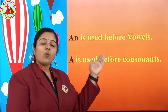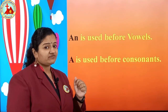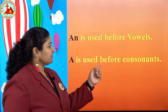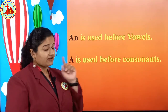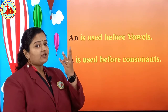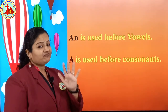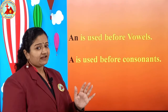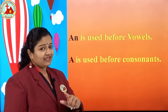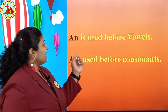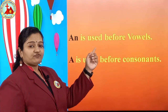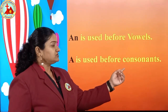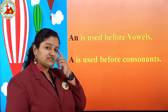AN is used before vowels. Which letter is used before a vowel? A and N. And A is used before consonants. Remember this. If A, E, I, O, U are there, then before that you have to put AN. And if other letters are there, then you have to put only A. Repeat after miss: AN is used before vowels. A is used before consonants. Remember this, keep this in your mind.